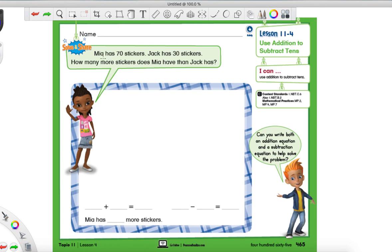So it says, Mia has 70 stickers. So I'm going to go ahead and circle that. Jack has 30 stickers. And they want to know, how many more stickers does Mia have than Jack? Now the word than, it's very important. That always means we're going to subtract. So if you look down here, they have a little addition number sentence set up with blanks, and a subtraction one.